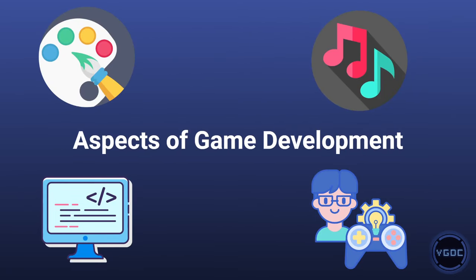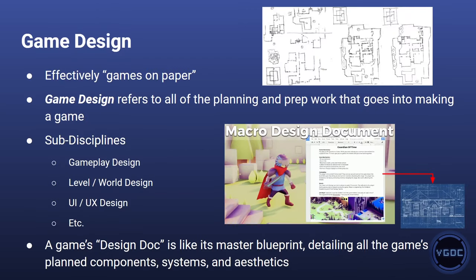To break it down a little bit, we're going to go into some of the specific aspects of game development. A big one is game design. Game design is unique to games because it is how you actually go and design the game on paper without any of the mechanics or the art. Any amount of planning or prep work that goes into making the game good is game design — whether you're sketching out a level or crunching numbers for stat tables in an RPG.